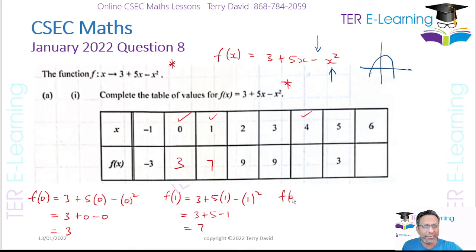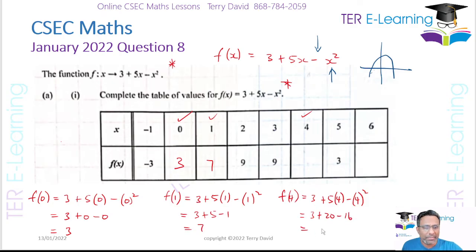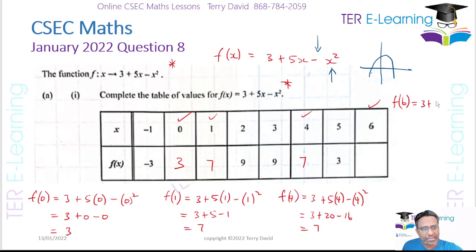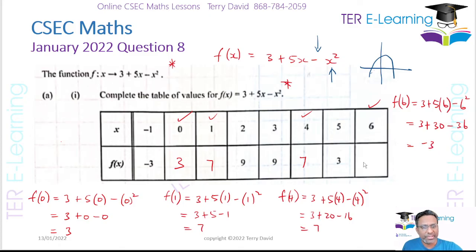Next I need to work out f(4): f(4) is equal to 3 plus 5 times 4 minus 4 squared. So that's 3 plus 20 minus 16. 20 minus 16 is 4, and 4 plus 3 is 7. And the last one is f(6): f(6) is equal to 3 plus 5 times 6 minus 6 squared, which gives 3 plus 30 minus 36. So 3 plus 30 is 33, and 33 minus 36 gives minus 3. So those are my values for the table.